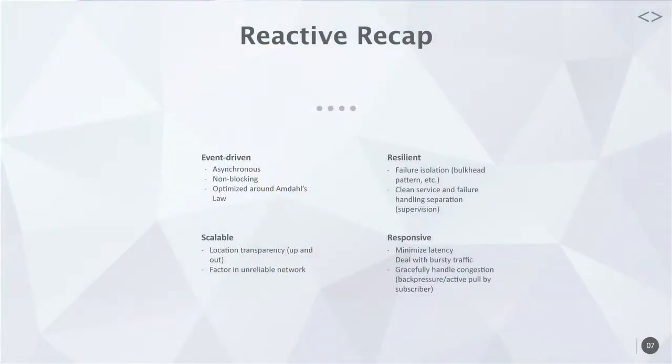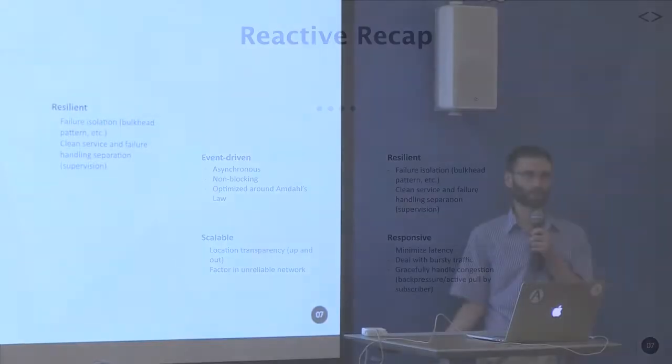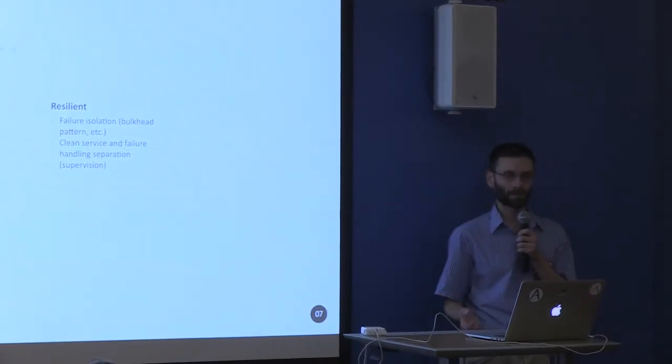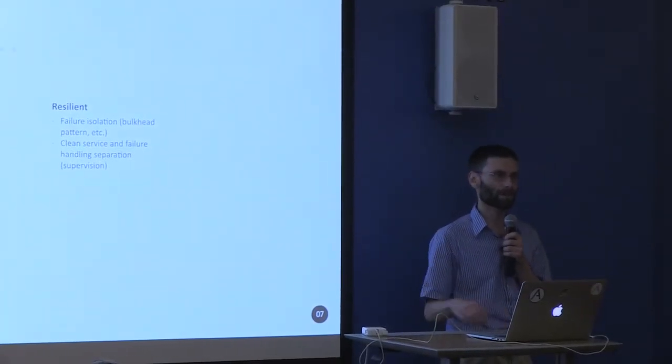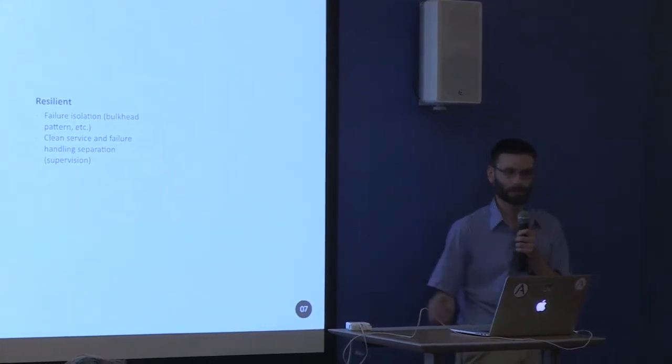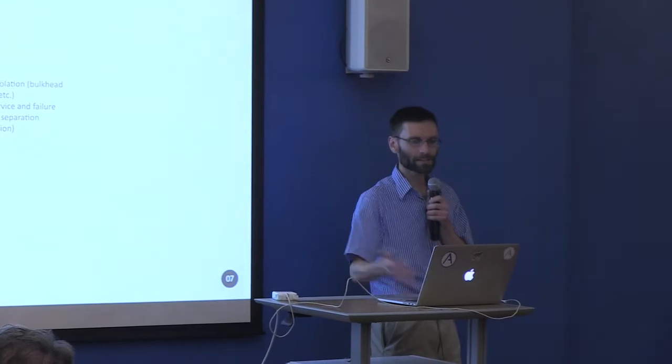Resilient — you have to isolate the failure. When you think about the bulkhead pattern or just bulkheads in an actual ship: if part of the ship starts absorbing water, the whole ship shouldn't sink, it should degrade gracefully. The nice thing that Akka provides here is not just the fault tolerance itself, but the ability to separate the service from the failure handling mechanisms. Instead of putting try-catch blocks everywhere, you say here's my supervisor — failure handling in one place, business logic in another.